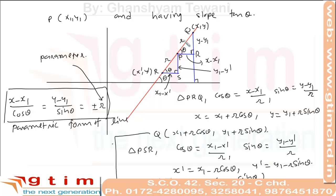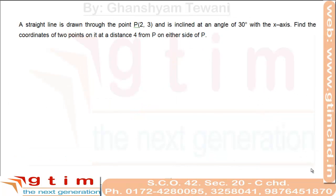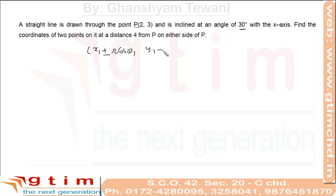Let's try an example based on this form of straight line. A straight line is drawn through point P(2, 3) and is inclined at an angle of 30 degrees with the x-axis. Find the coordinates of two points on it at distance 4 from P, on either side of P. We know the formula: coordinates are (x1 ± r·cos(theta), y1 ± r·sin(theta)).